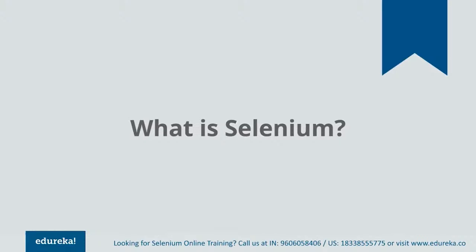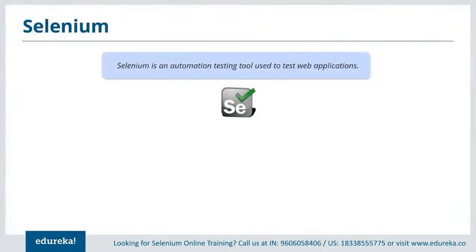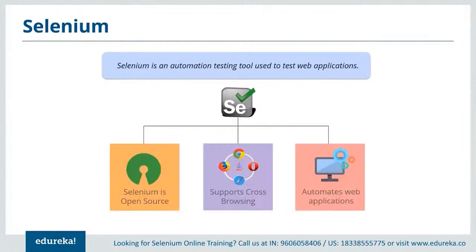Selenium is an automation tool used to test web applications. It makes the process relatively easy by providing valuable functionalities and libraries that help in testing any software or web application. Selenium is an open source portable framework used to automate test cases in a web application. It can run on different browsers like Chrome, Safari, Opera, and Explorer, and supports cross-browser testing. It supports different programming languages like Java, Python, Ruby, and C#.